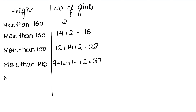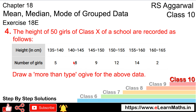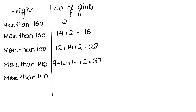Now more than 140: we add 8 to what we already have, which is 37. So 8 plus 37 gives us 45.